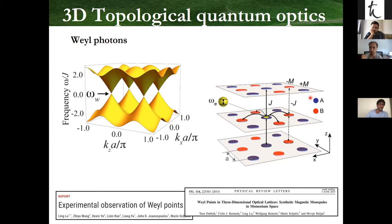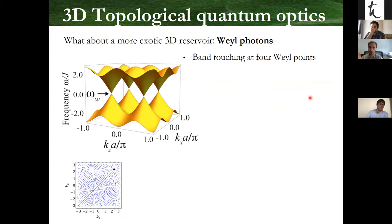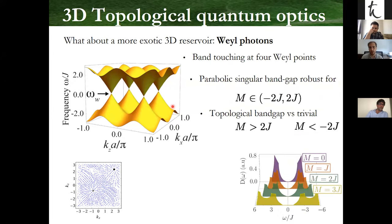You can move the Weyl points using the staggered mass hopping term to tune the band structure. The density of states has a parabolic singular band gap at m=0, and this remains until a critical point |m| = 2J where the band gap opens — distinguishing a topological insulator phase (positive m) from a trivial insulator (negative m). The Weyl point can be thought of as a semi-metallic phase at the boundary between two topologically non-trivial phases.